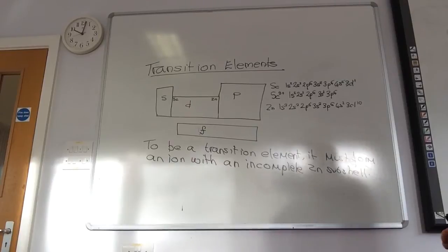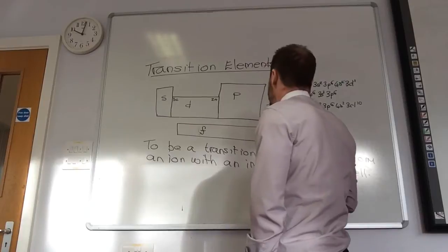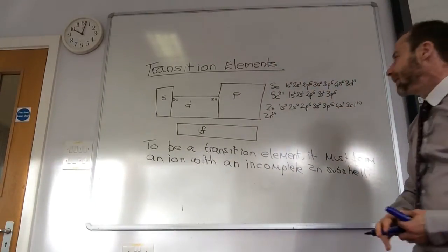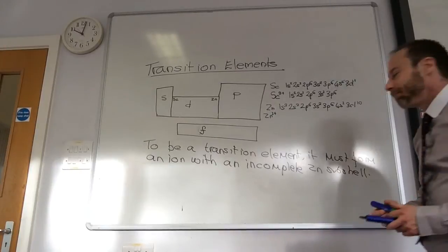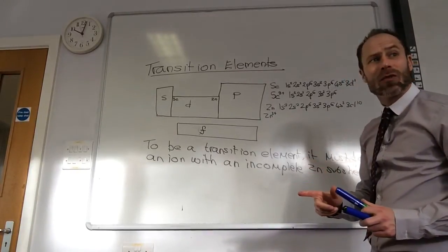Zinc only forms Zinc 2+ ions. How do you know which ions they form? Oh, we'll go through the ions a bit. You just learn. So, Zinc just forms Zinc 2+. Where are the electrons going to come from?